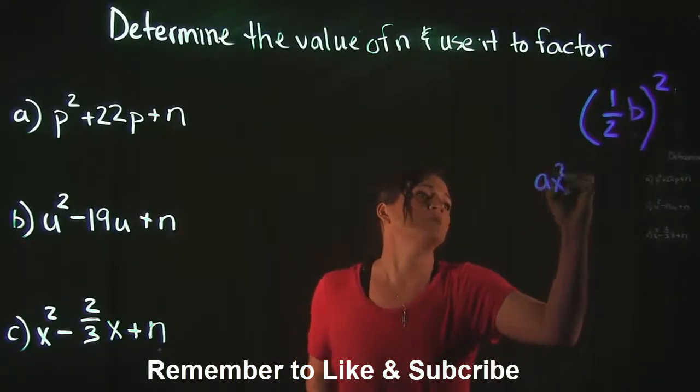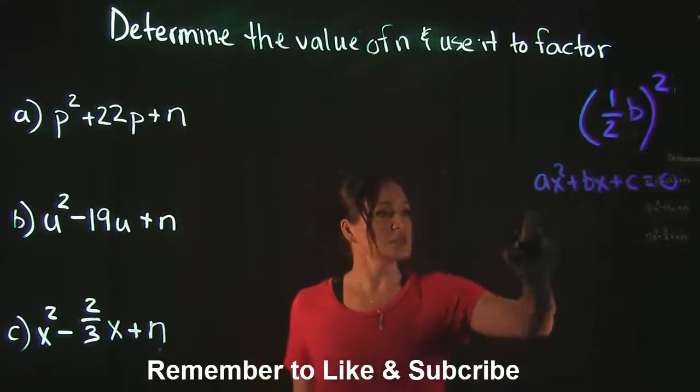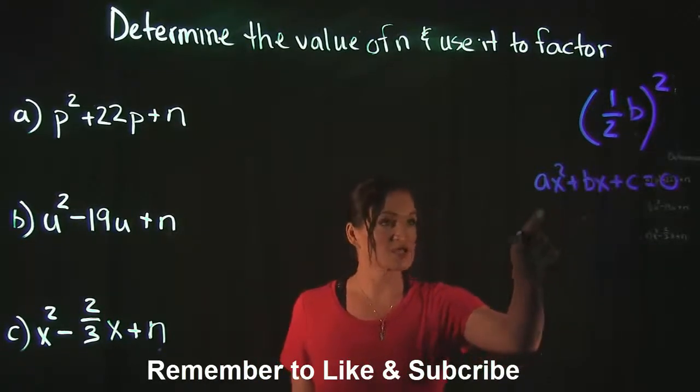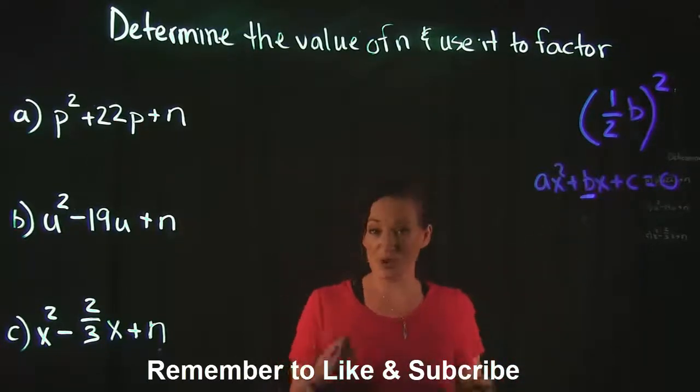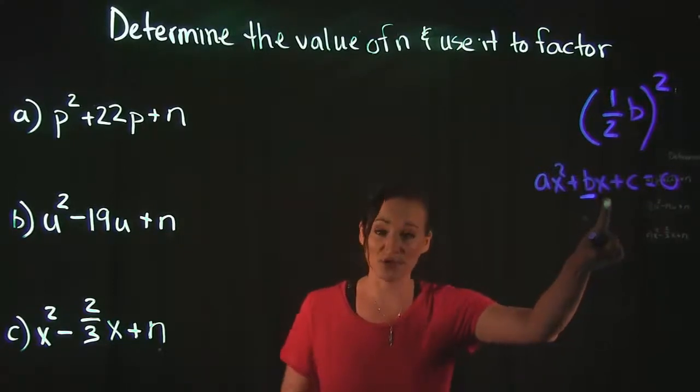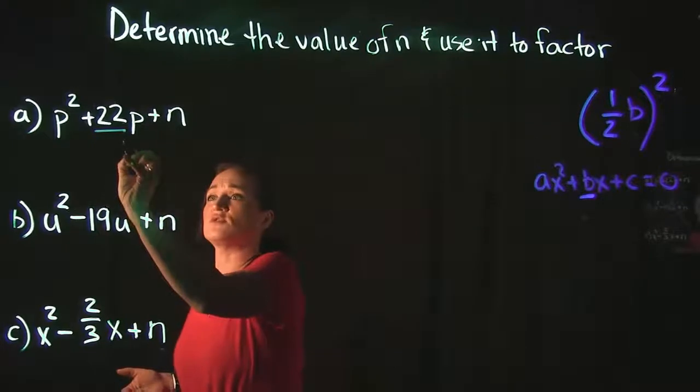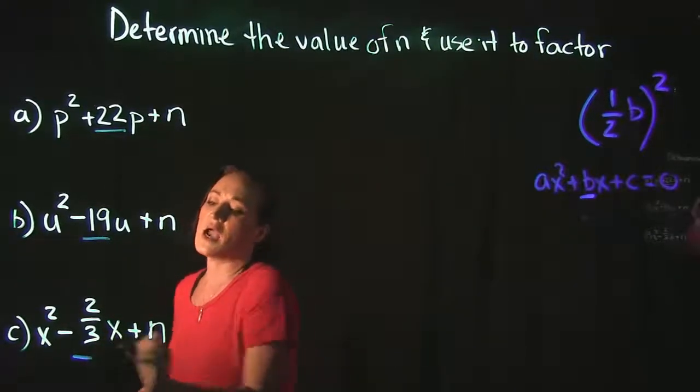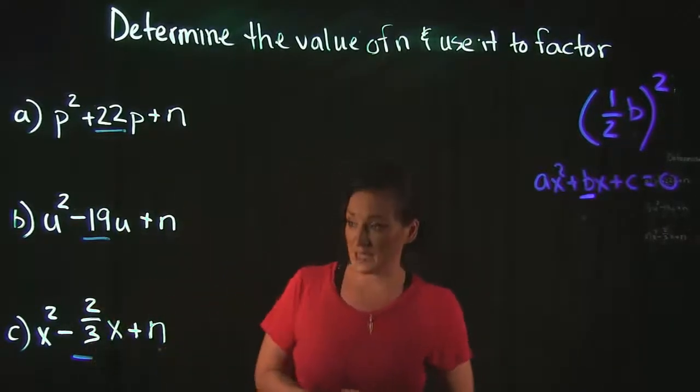b comes from your definition of a quadratic equation. This is the book definition of what a quadratic equation looks like: ax squared plus bx plus c. b is your middle term, the coefficient of the x to the first power term. So if I go over here, b is the 22 for example a, the 19 for example b, and the two-thirds for example c. So that's what your b's are going to be.